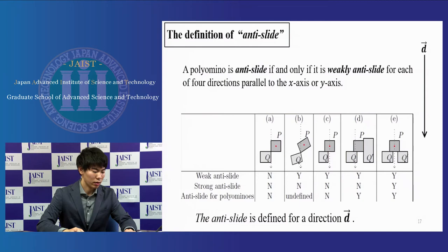Polyomino is anti-slide if and only if it is weakly anti-slide for each four directions parallel to x-axis or y-axis. By this definition, we can consider the case D is anti-slide. This model fits the anti-slide puzzles in the 3D version by Amano et al. And it also fits real anti-slide puzzles for the set of polyominoes, which are the most popular one in the puzzle society.